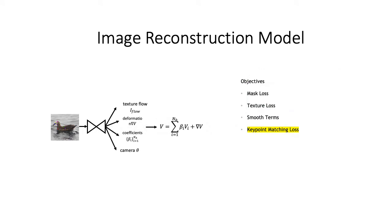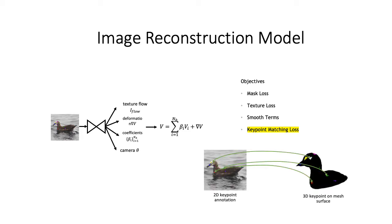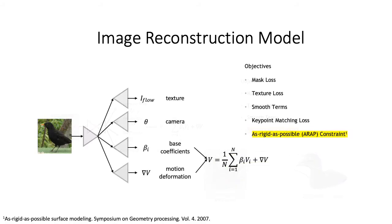Besides mask, texture, and smoothness objectives, we also propose a keypoint matching loss that helps the model capture movement by enforcing projected keypoints to match with 2D keypoint annotations. We also utilize as-rigid-as-possible constraints to encourage smooth mesh deformation captured by the motion deformation branch.